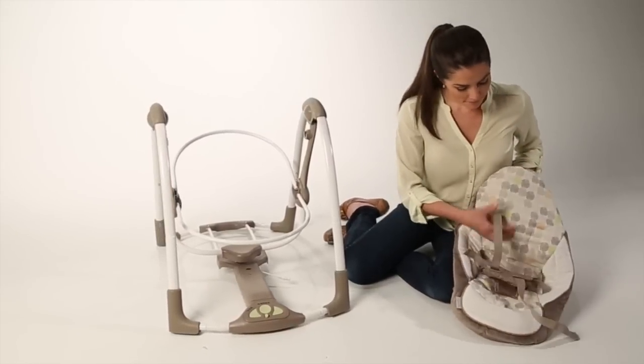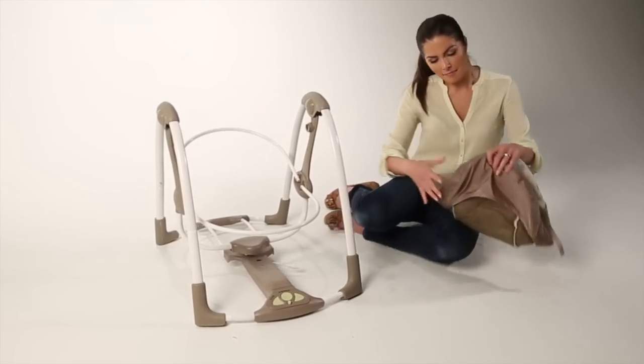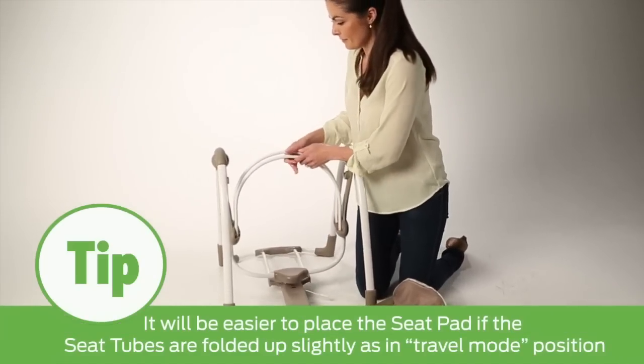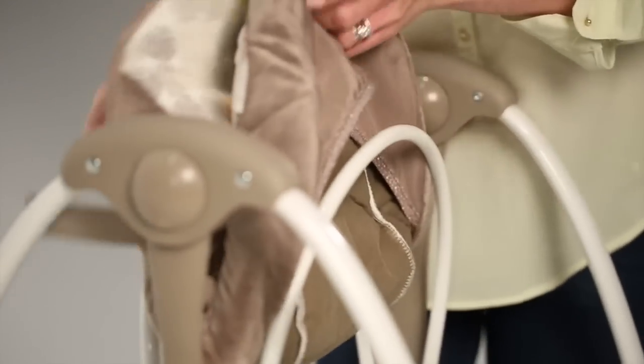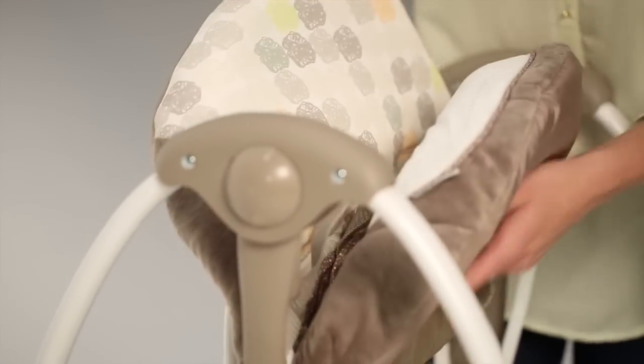Now, place the seat pad over the frame using the pockets on the top and bottom of the seat pad. Tip: It will be easier to place the seat pad if the seat tubes are folded up slightly as in travel mode position. Then unfold them back to the regular swing seat position.